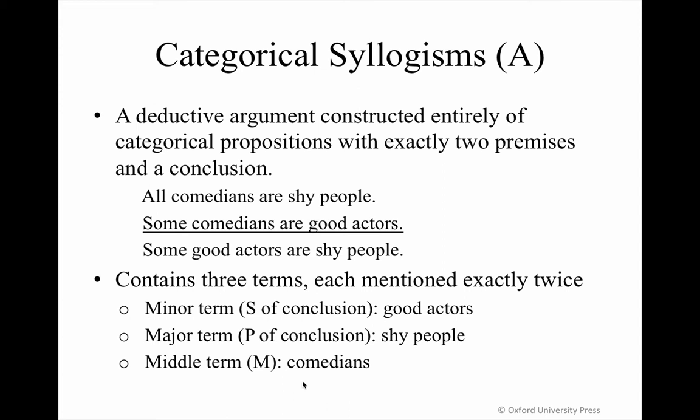Let's take a look at the example on the screen. This categorical syllogism consists of two premises — 'All comedians are shy people' and 'Some comedians are good actors' — and the conclusion, 'Some good actors are shy people.'